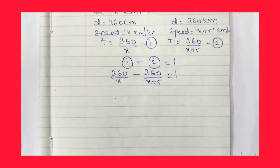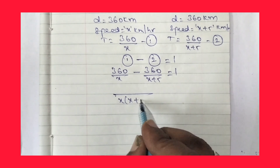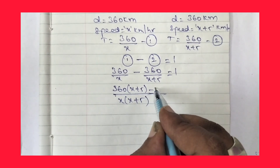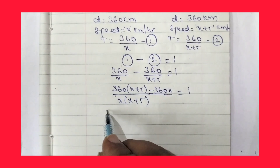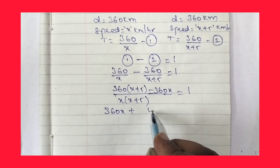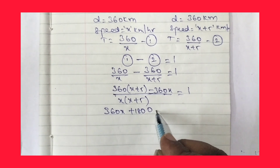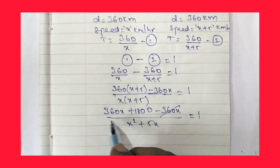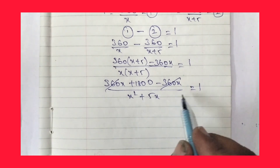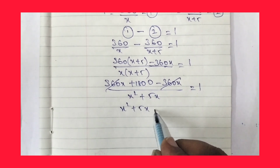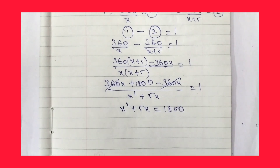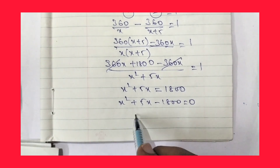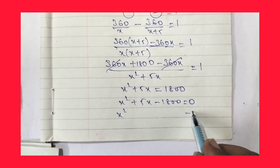The difference in time is equal to 1. So 360/x - 360/(x + 5) = 1. The LCM of the denominators is x(x + 5). Cross multiplying: 360(x + 5) - 360x = x(x + 5). Expanding: 360x + 1800 - 360x = x² + 5x. So x² + 5x = 1800.